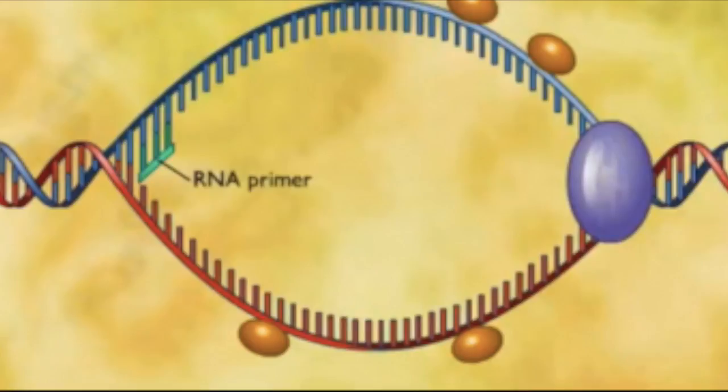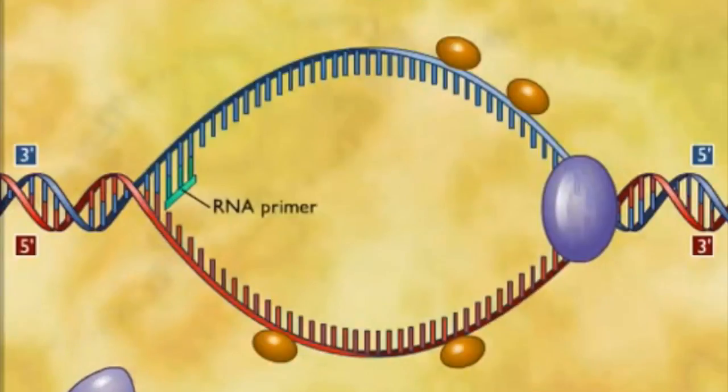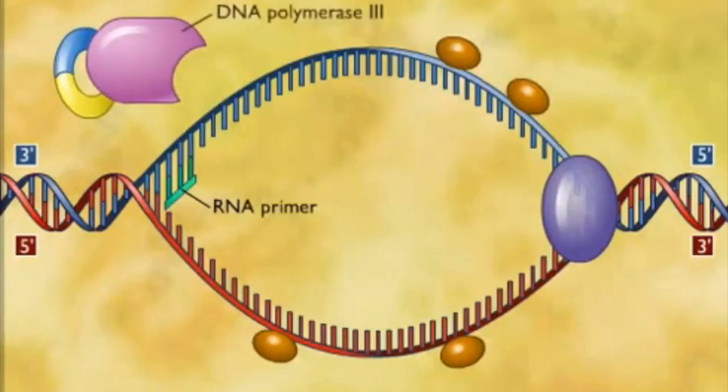The DNA strand starts with the 3' end of the RNA primer. Enzymes called DNA polymerases catalyze the synthesis of new DNA by adding nucleotides to a pre-existing chain. Most DNA polymerases require a primer and a DNA template strand along with complementary DNA nucleotides.